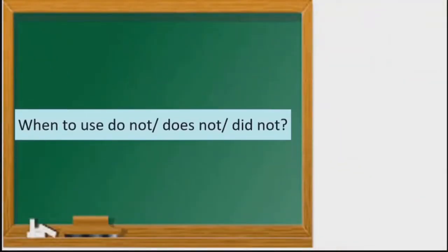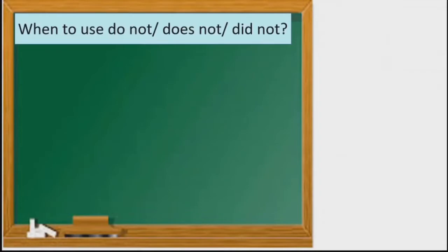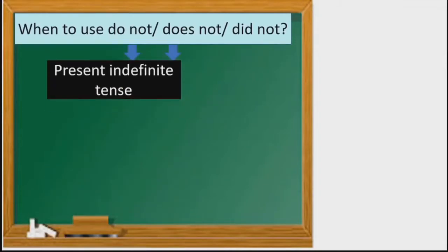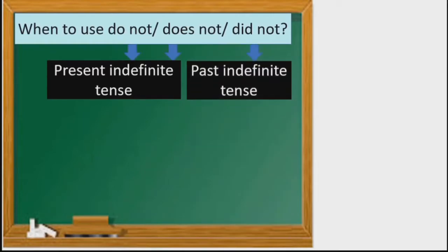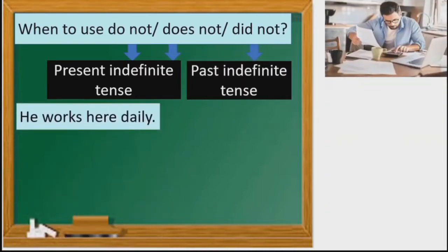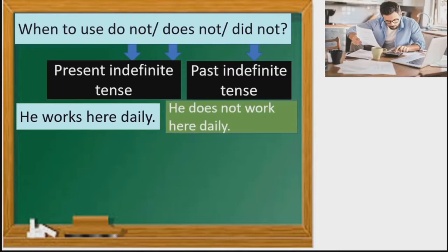So let us learn when to use 'do not,' 'does not,' and 'did not.' Children, 'do not' and 'does not' are used in present indefinite tense, and 'did not' is used in past indefinite tense. For example: 'He works here daily' becomes 'He does not work here daily.' You can see this is present indefinite tense, so we use 'does not' because 'does' is used with he, she, or a name.